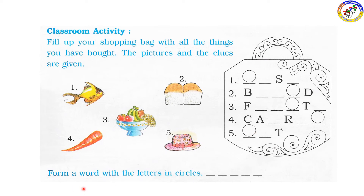Form a word with the letters in the circle. I am going to show the circle. The word is formed from the letters given. First letter is F - fish. F.I.S.H. Next word is bread - B.R.E.A.D.